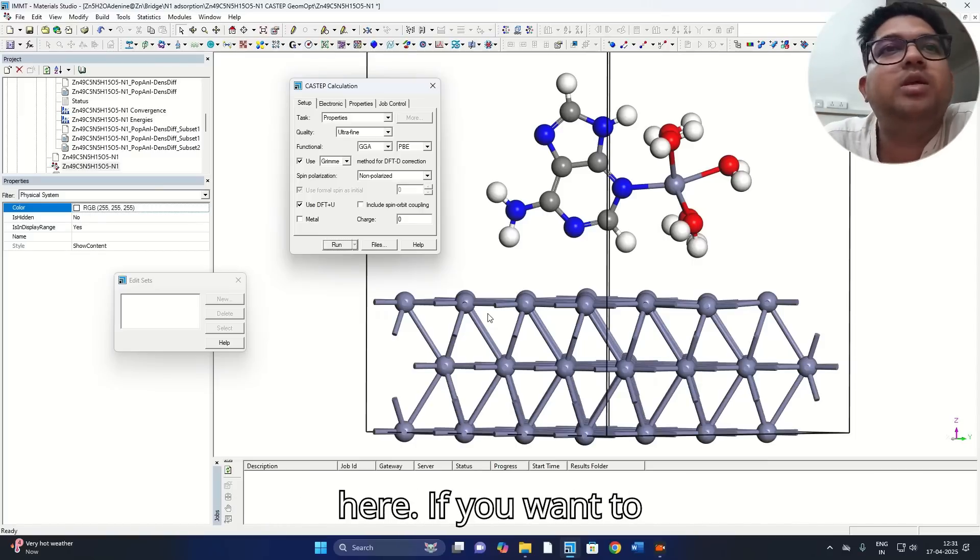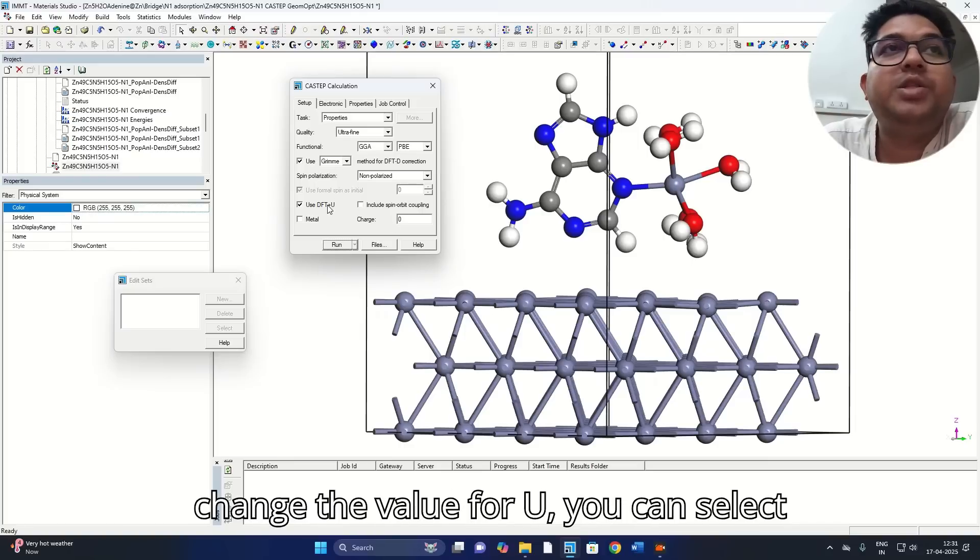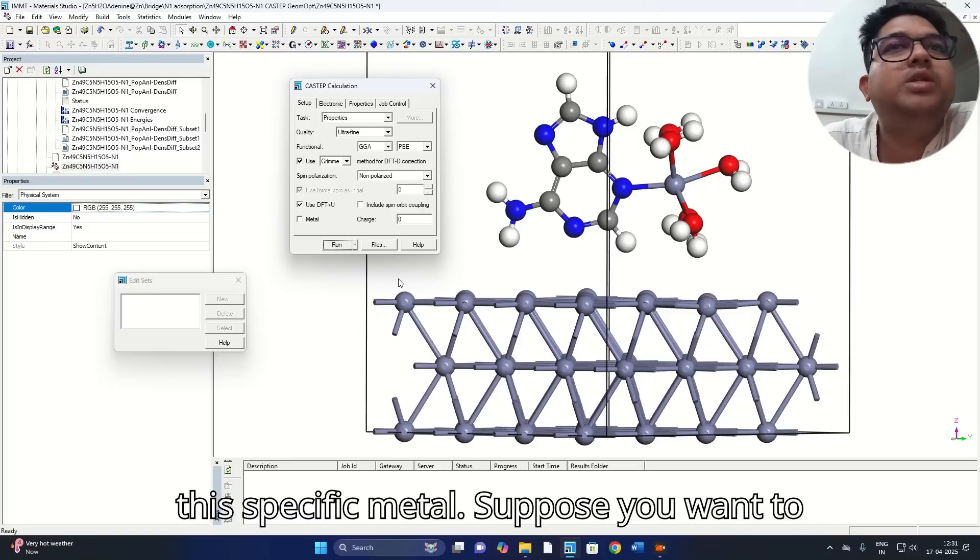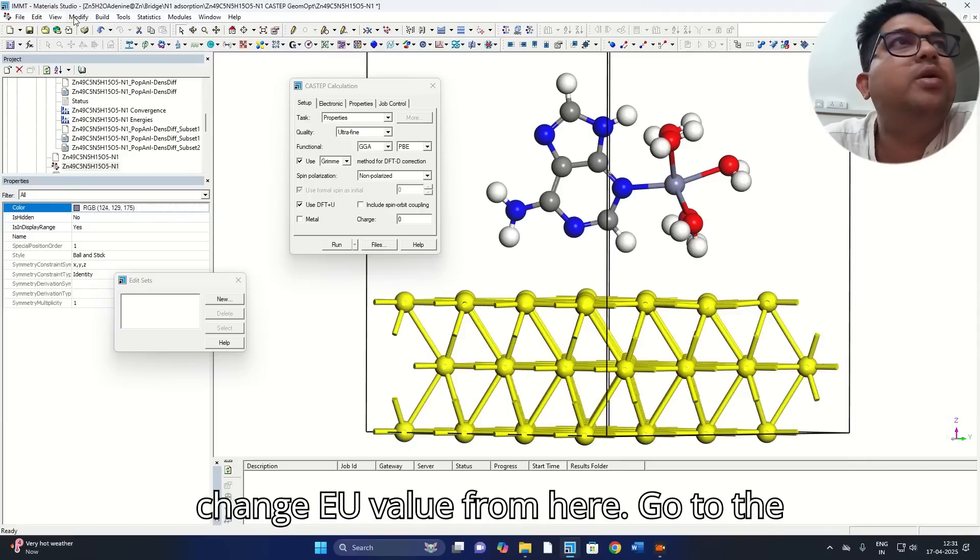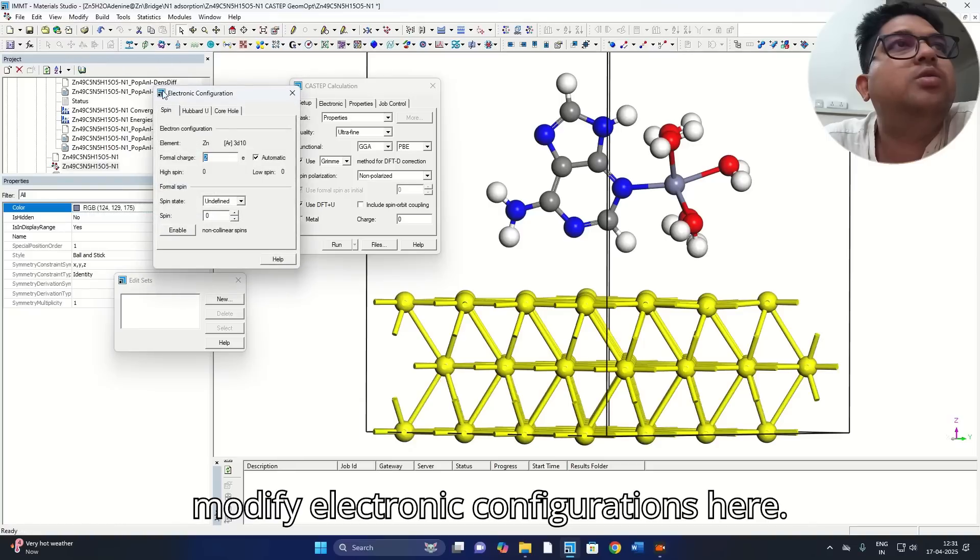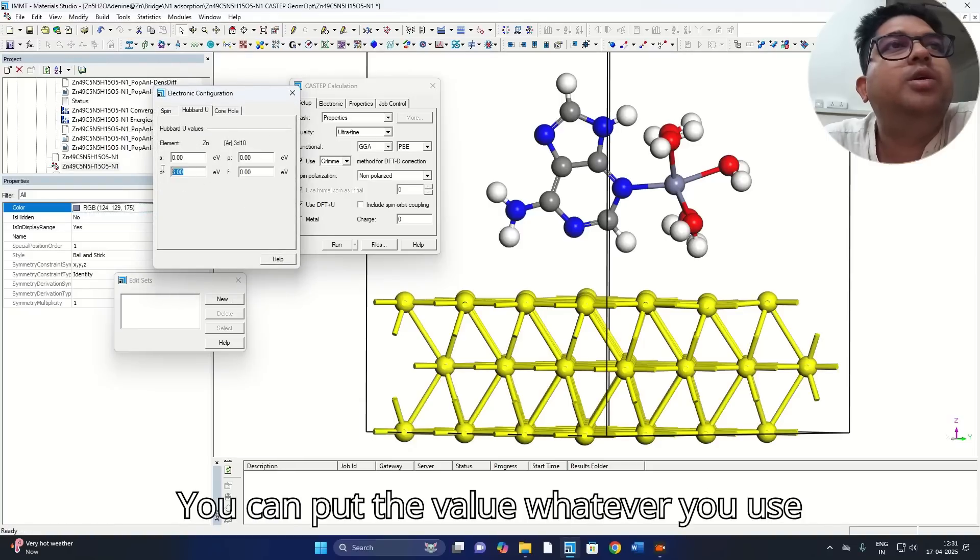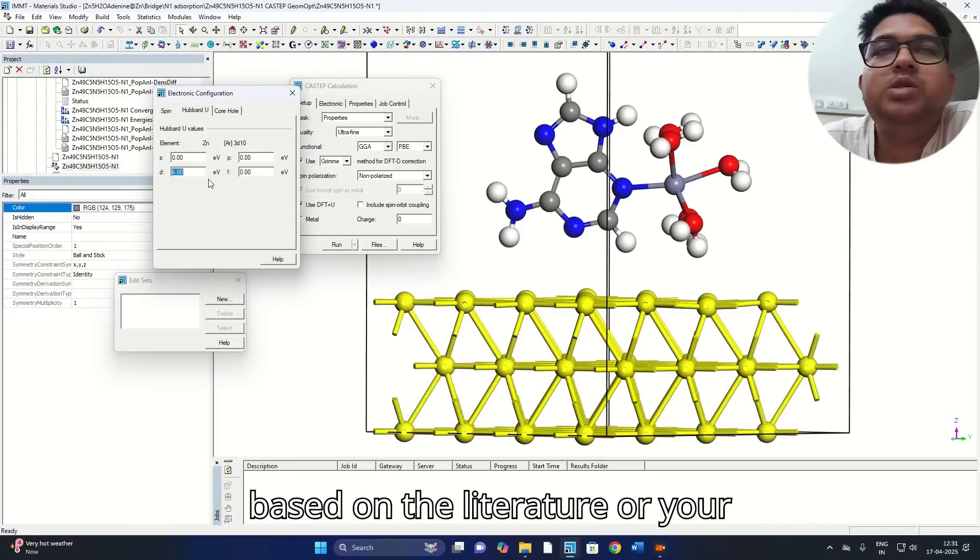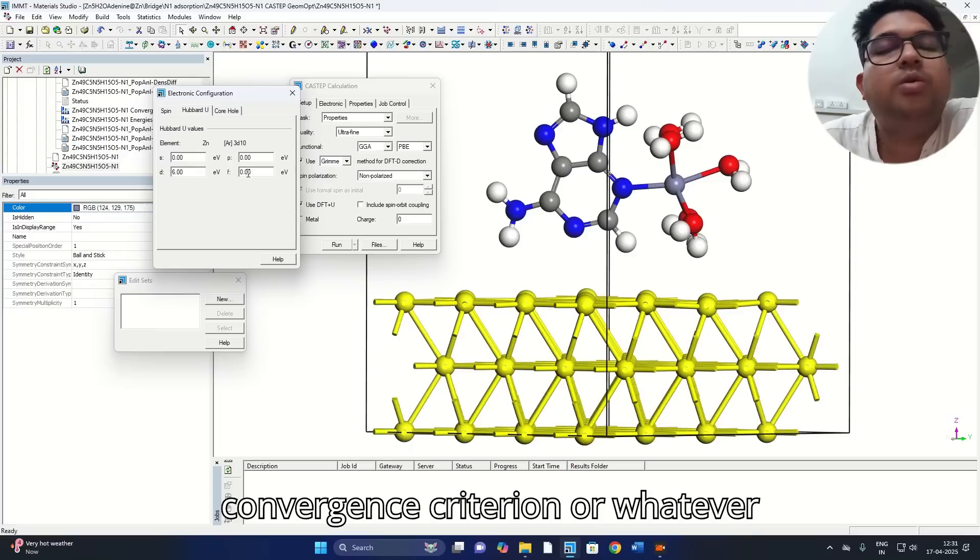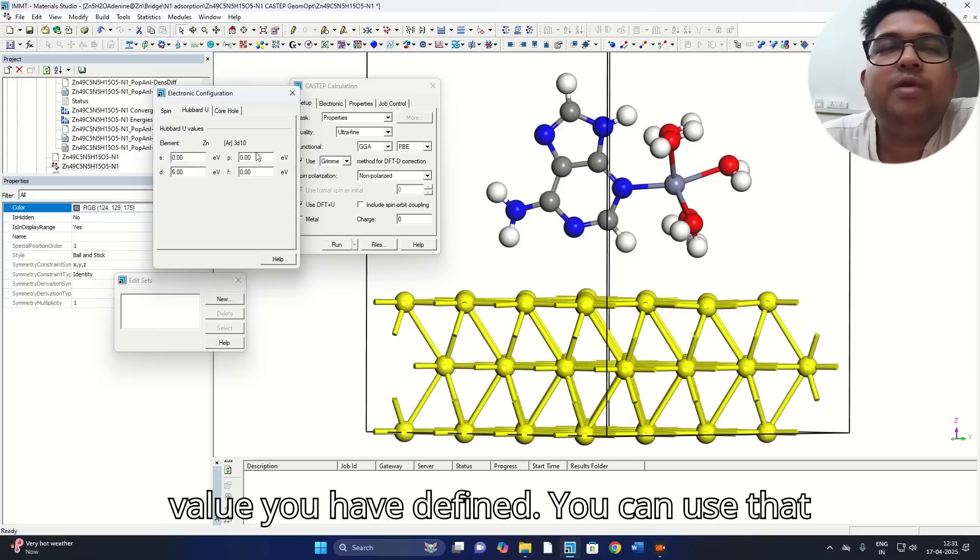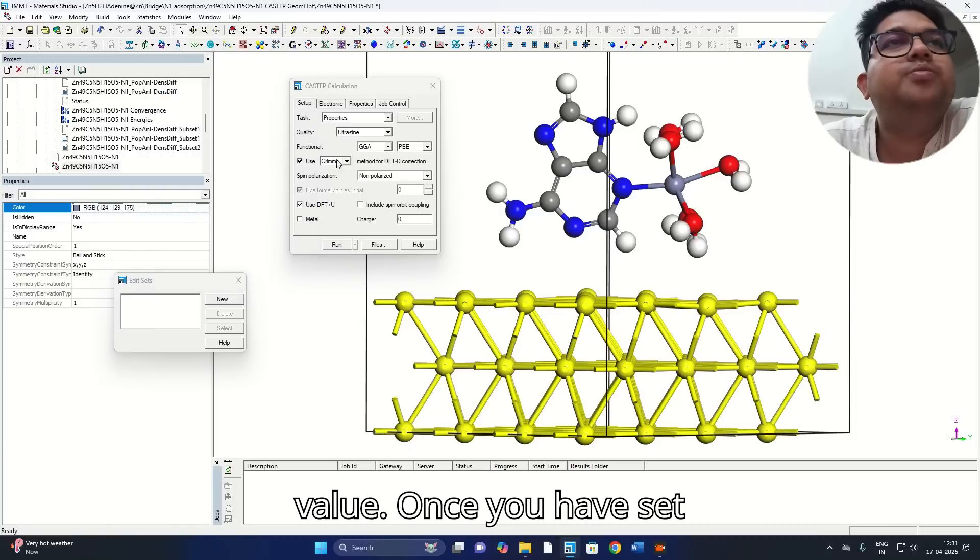I'm using Grimme dispersion correction for weak interactions and also using DFT+U or the Hubbard correction parameter for this metal here. If you want to change the value for U, you can select the specific metal. Go to the modify electronic configurations. Here you can put the value whatever U is based on the literature or your convergence criteria.